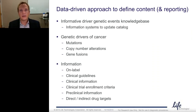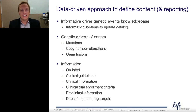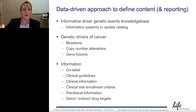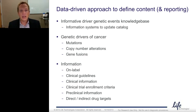We've taken a systematic data-driven approach to define the content we desire to measure on the Oncomine Cancer Panel. The two questions — what to measure and what to report — are actually answered by the same data. If we do this right, we can collect all of this important information and knowledge, and that tells us both what we need to measure from a mutations, copy number events, and gene fusions perspective, but also what important pieces of information we need to report out on the relevance of those alterations. I'll tell you about our informative driver genetic events knowledge base and the information systems we're building to keep this knowledge base up to date as new information becomes available in the public domain.